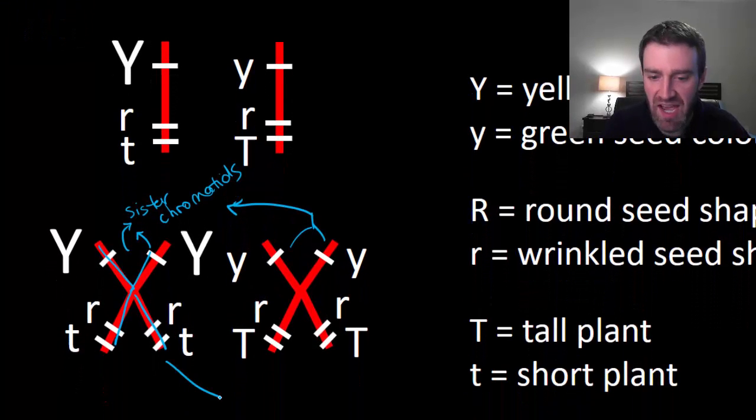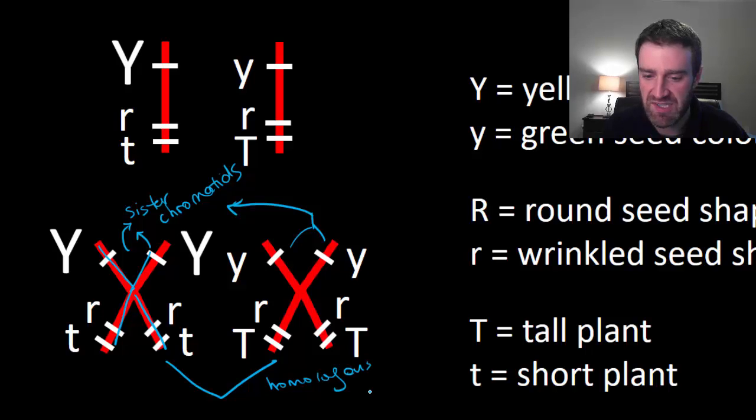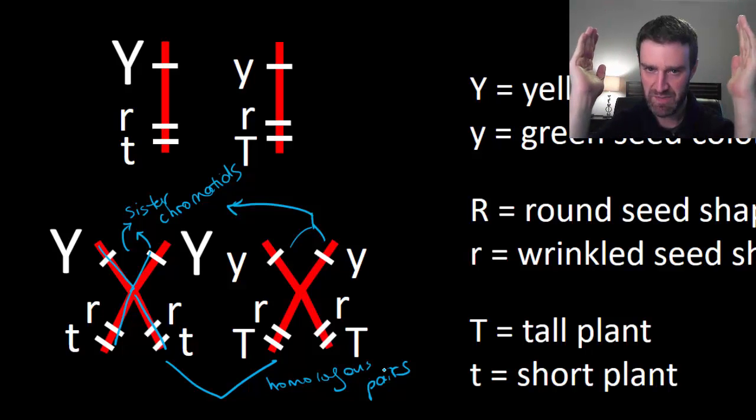These however are still homologous pairs to each other. I need you to see the clear difference between sister chromatids - tied together, X's - and homologous pairs, never tied together, might be a little different in terms of what alleles they carry.